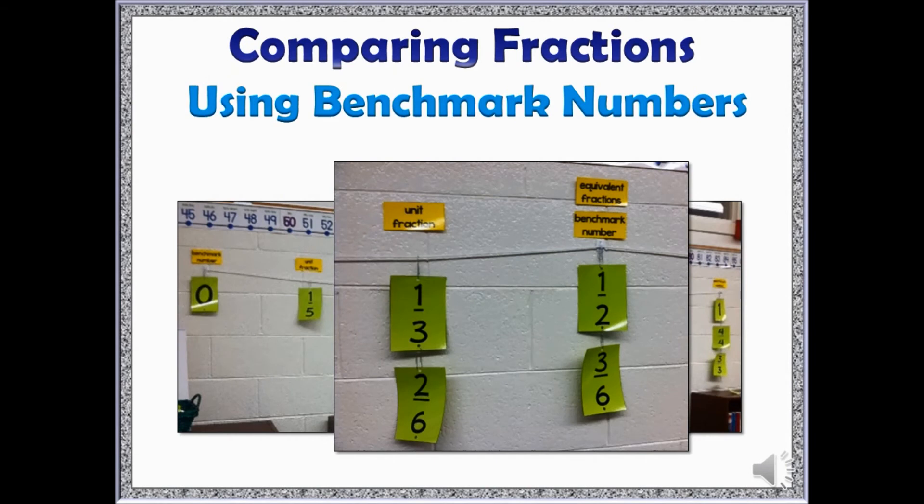Benchmark numbers are important tools for comparing fractions. Benchmark fractions, or benchmark numbers, are quantities that are easy to visualize. For example, zero, one-half, and one. Throughout your fractions unit, refer to benchmark numbers. Also be sure to place fractions on a classroom number line so students can reason about the size of fractions in relation to the benchmark numbers. Then, when students are asked to compare two fractions, for example, one-third and seven-eighths, they can reason that one-third is a little less than one-half and seven-eighths is almost one whole, so seven-eighths is bigger. The number line will also serve as a great tool as students learn about equivalent fractions. Remind students that any time two numbers land on the same place on the number line, they are equivalent.